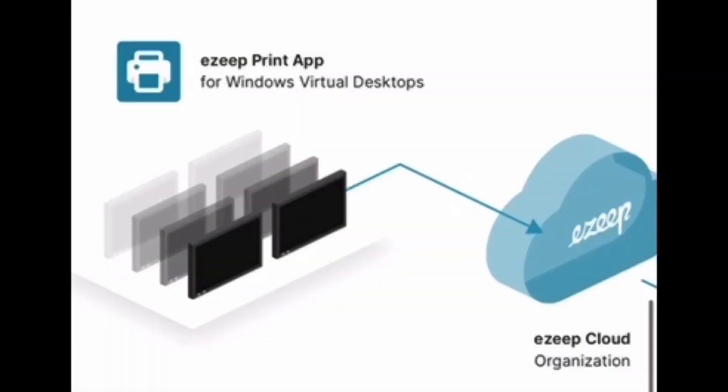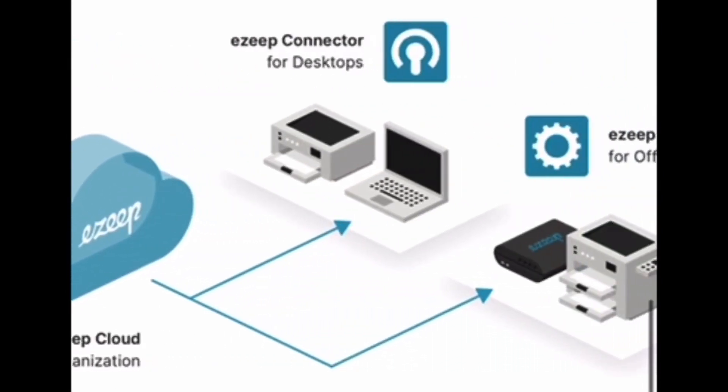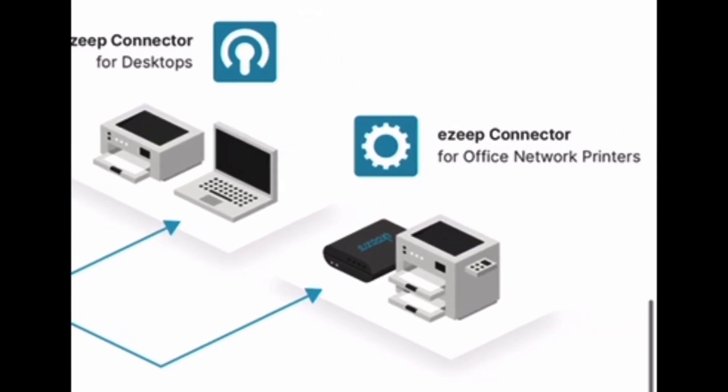If we think about it this way: organizations want their remote workers to be able to access Windows Virtual Desktop and print to their local printers. There are two main software components in the Windows Virtual Desktop solution by Ezeep, both downloadable from our central Ezeep Cloud console. We have an Ezeep Print App agent and an Ezeep Connector. The Ezeep Print App agent is deployed to the Windows Virtual Desktop instances and connects the desktops to the Ezeep Cloud. The Ezeep Connector is deployed on the laptops or print servers.